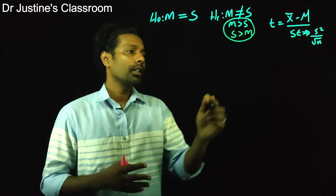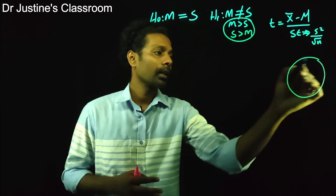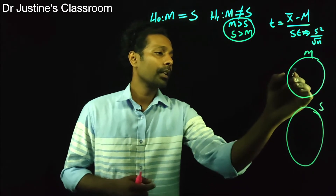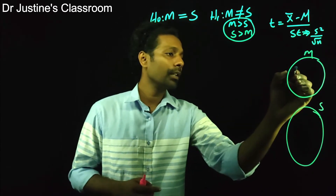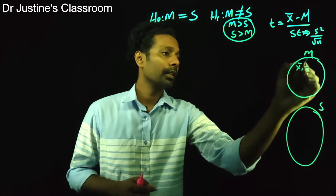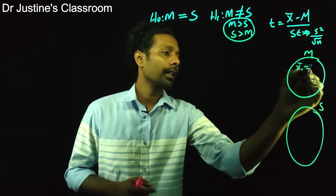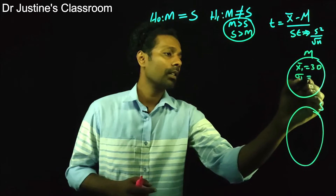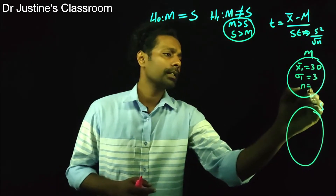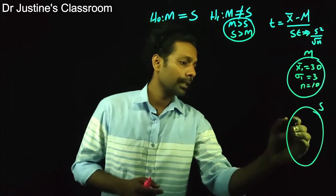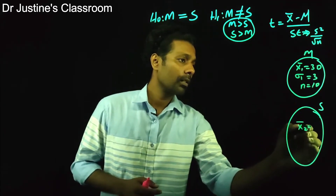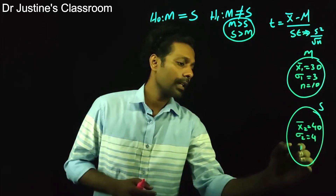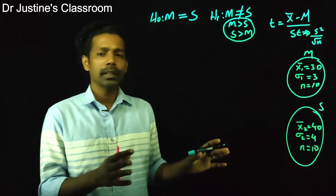Let's assume some sample values. For the married men group: mean = 30, standard deviation = 3, n = 10. For the single men group: mean = 40, standard deviation = 4, n = 10.